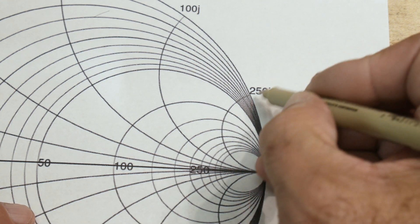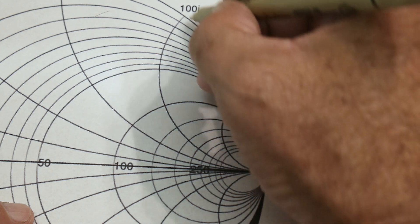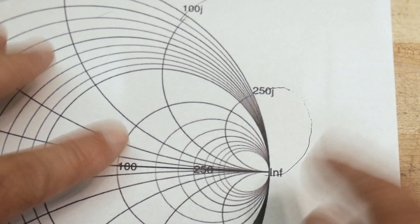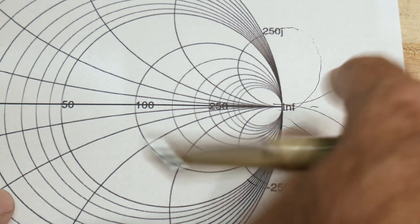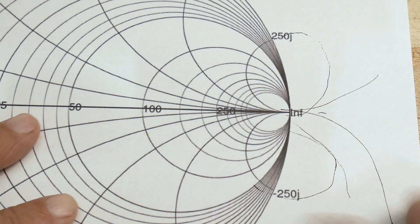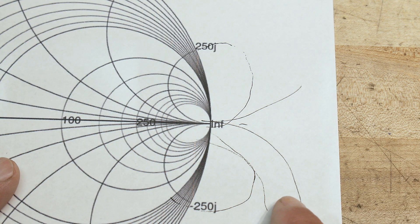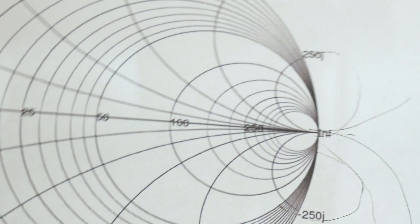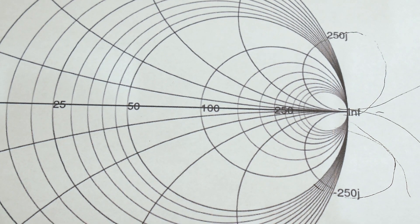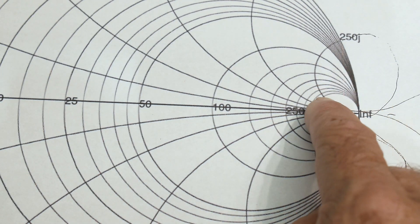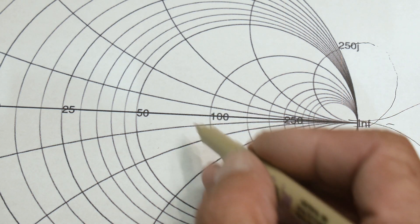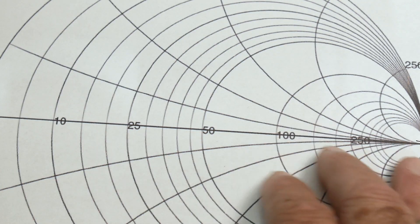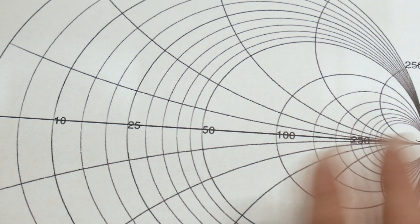If you look at the mathematics, this is actually a circle, and that's actually a circle, and that's actually a circle. They go up, and these circles go down. The circle goes all the way around and comes back in. So you can have circles that go this way, circles that go up, circles that go down, circles that go that way — and you can make this really cool graph paper of all these circles. This is a Smith chart.